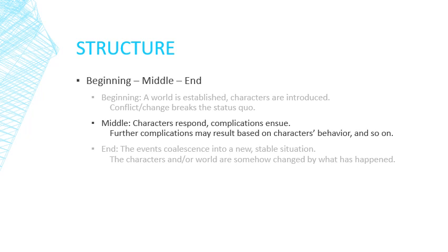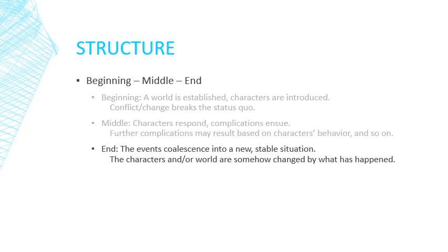After this beginning, after this conflict emerges to change things, the characters respond and complications ensue. Something happens because of the conflict and the characters have to react. Further complications may result: they react to the initial change, that causes another conflict, they react to that, and so on. Finally, at the end of the story, the events coalesce into a new, more or less stable situation — a new status quo. The characters have been changed, hopefully, and the world has changed somehow.